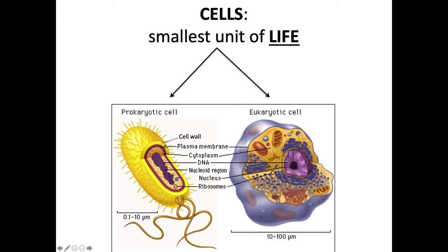Here's a review question: an organism is unicellular, has a cell wall, but no nucleus. What domain would this organism be placed in? It would be Bacteria or Archaea — they are single-celled and have a cell wall, but since they are prokaryotes, they do not have a nucleus. What do they have instead? They have the nucleoid region.